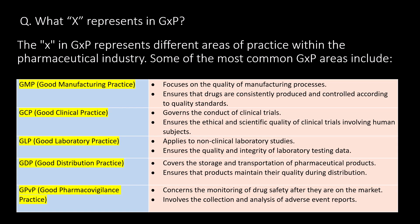A very commonly asked question: what does X represent in GXP? The X in GXP represents different areas of practice within the pharmaceutical industry. Some of the most common GXP areas include GMP (Good Manufacturing Practice), GCP (Good Clinical Practice), GLP (Good Laboratory Practice), GDP (Good Documentation Practice), and GPVP (Good Pharmacovigilance Practice).